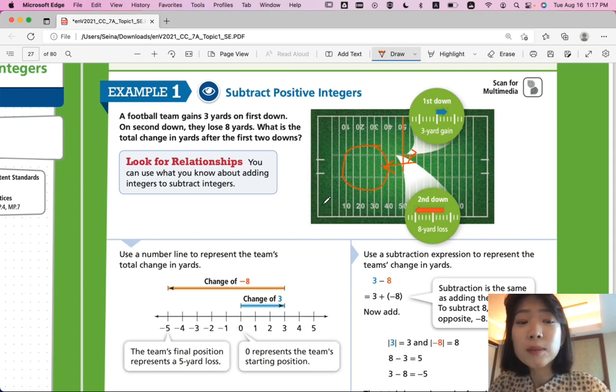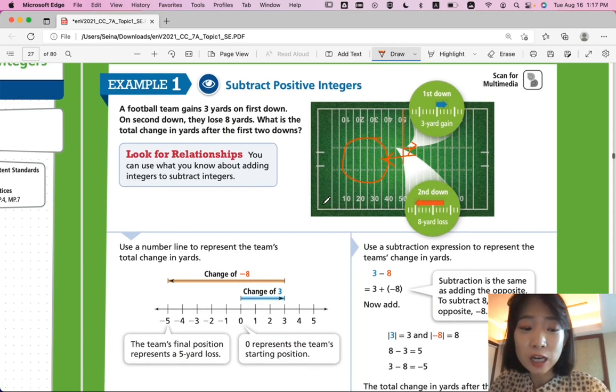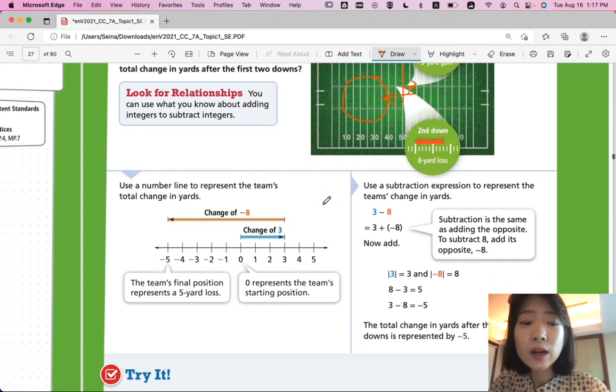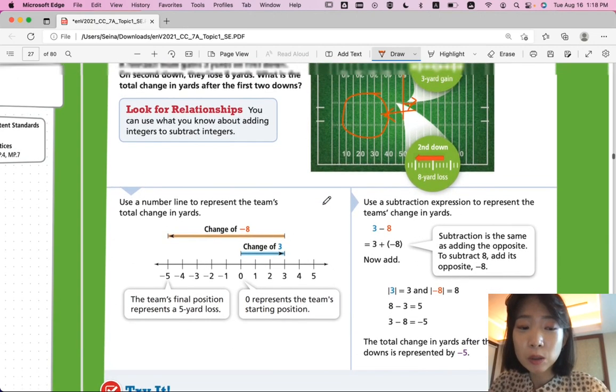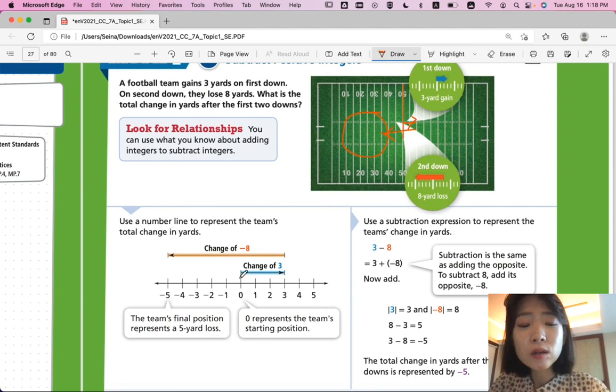So you can use what you know about adding integers to subtract integers. So first, use a number line to represent the team's total change in yards. So from 0, you add 3, and then from that 3, you subtract 8. So ultimately, you end up with negative 5.